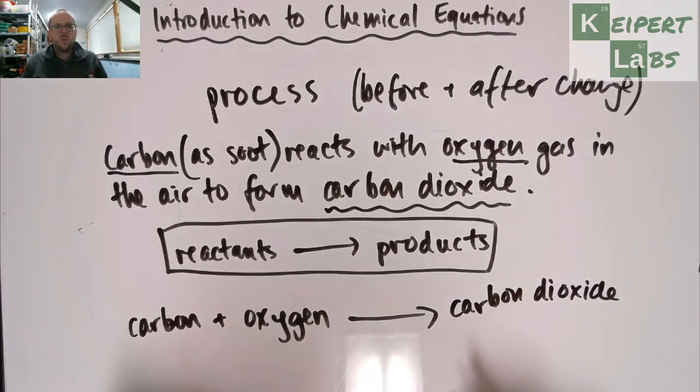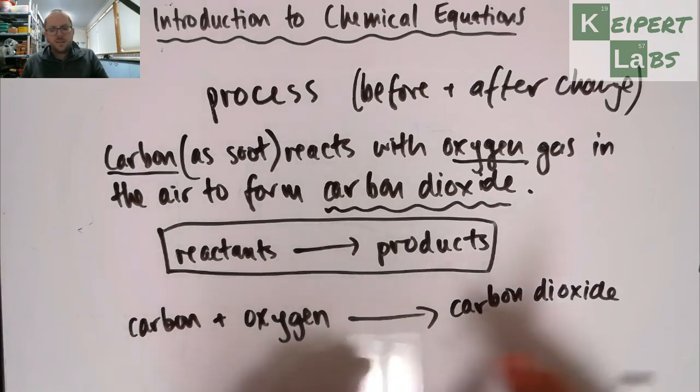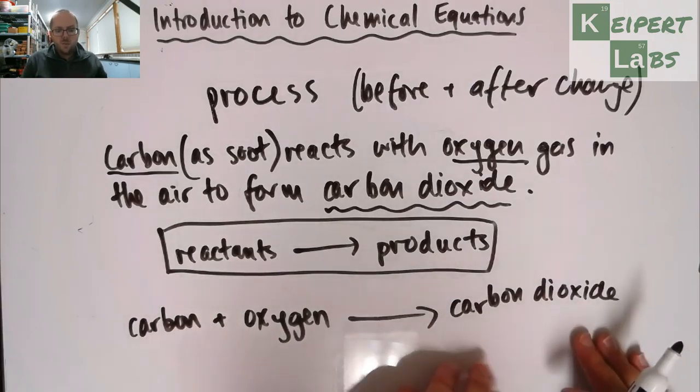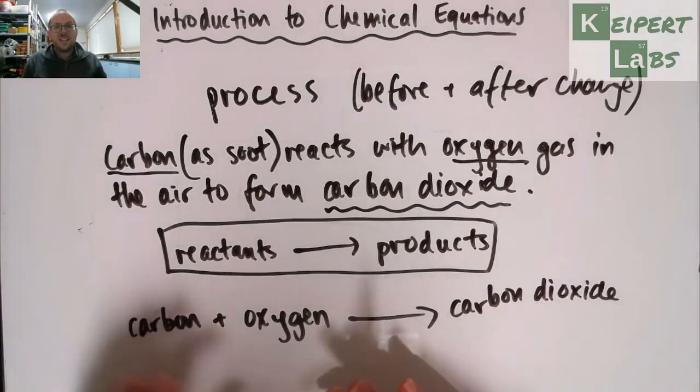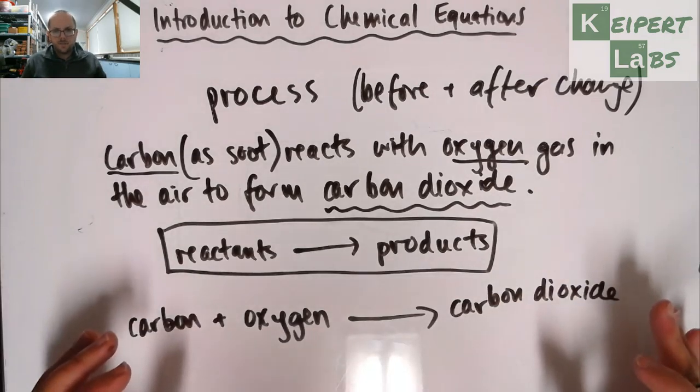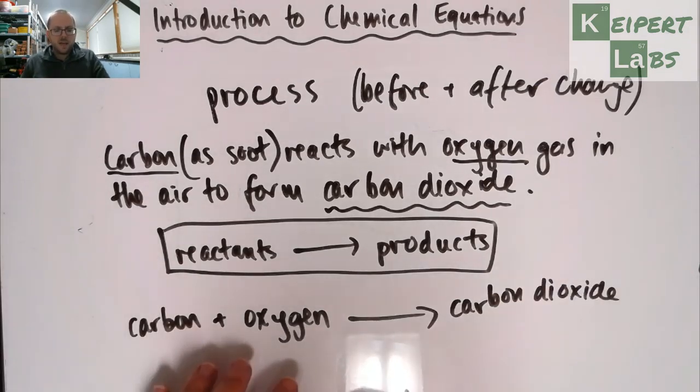So this is our word equation to show what is happening in this process. Carbon plus oxygen becomes carbon dioxide. Now, the reason that I don't have an equal sign here is I'm showing that this is what was there at the start. This is what's there at the end, that we don't have all of these things in the container at the same time. That we're saying that these became that.